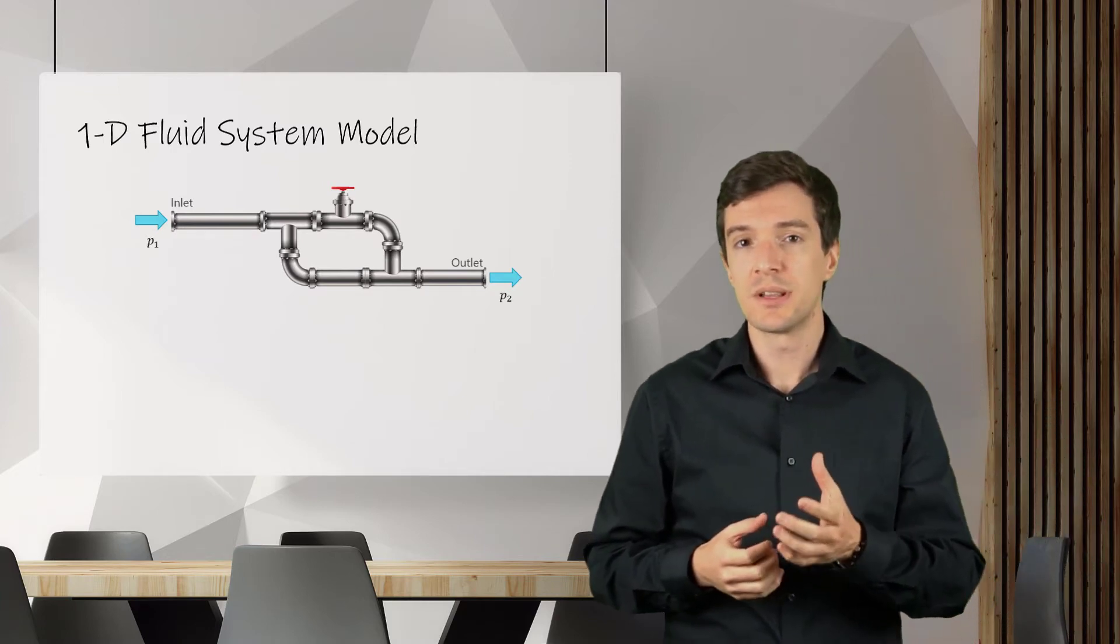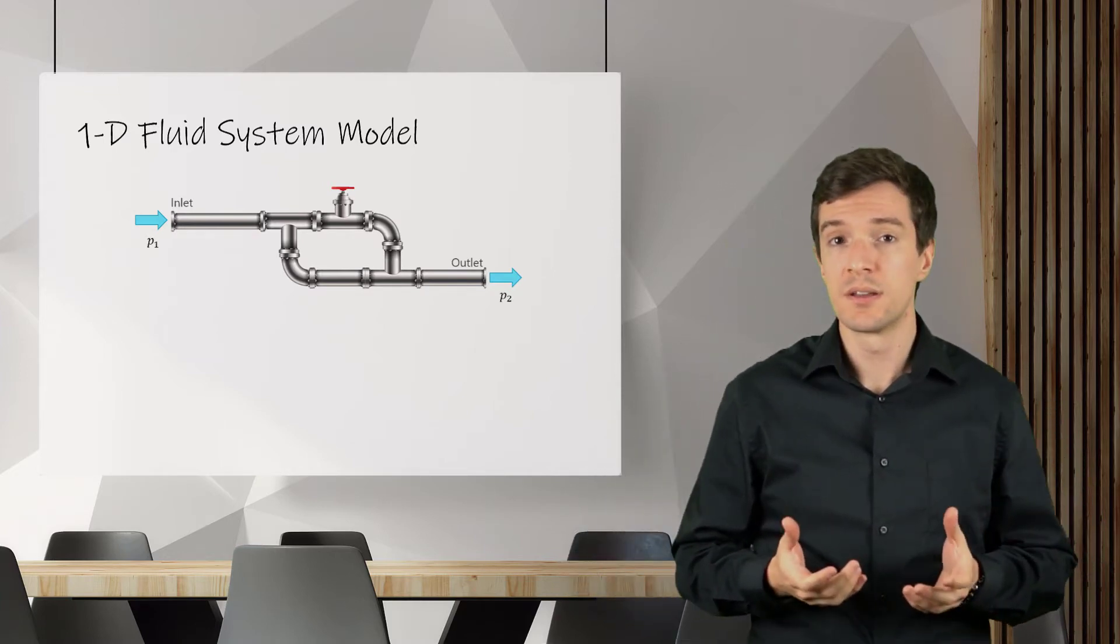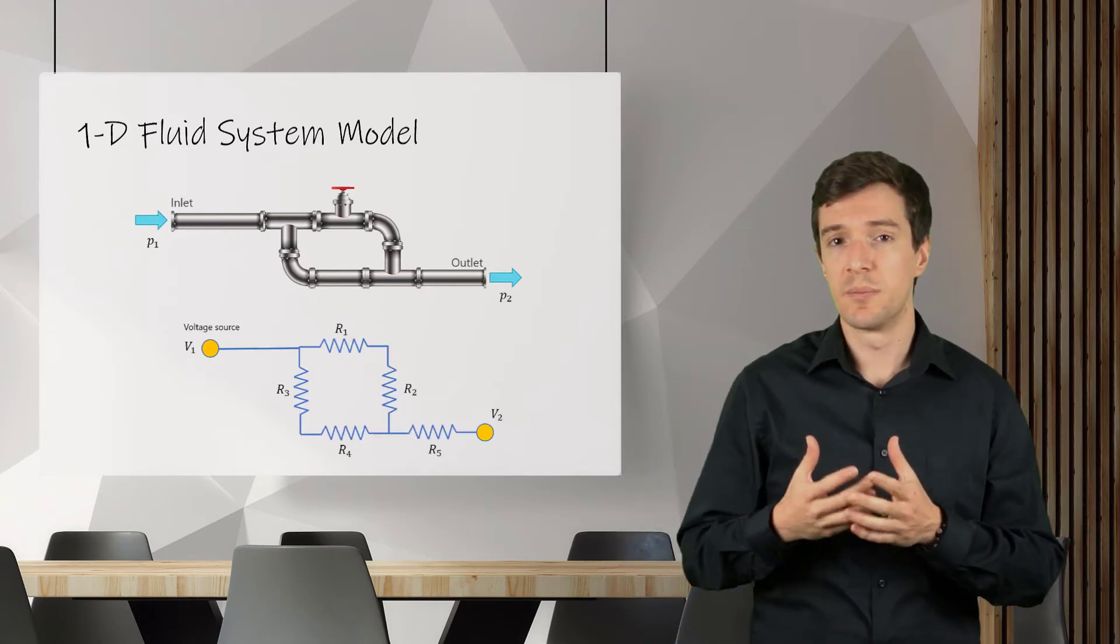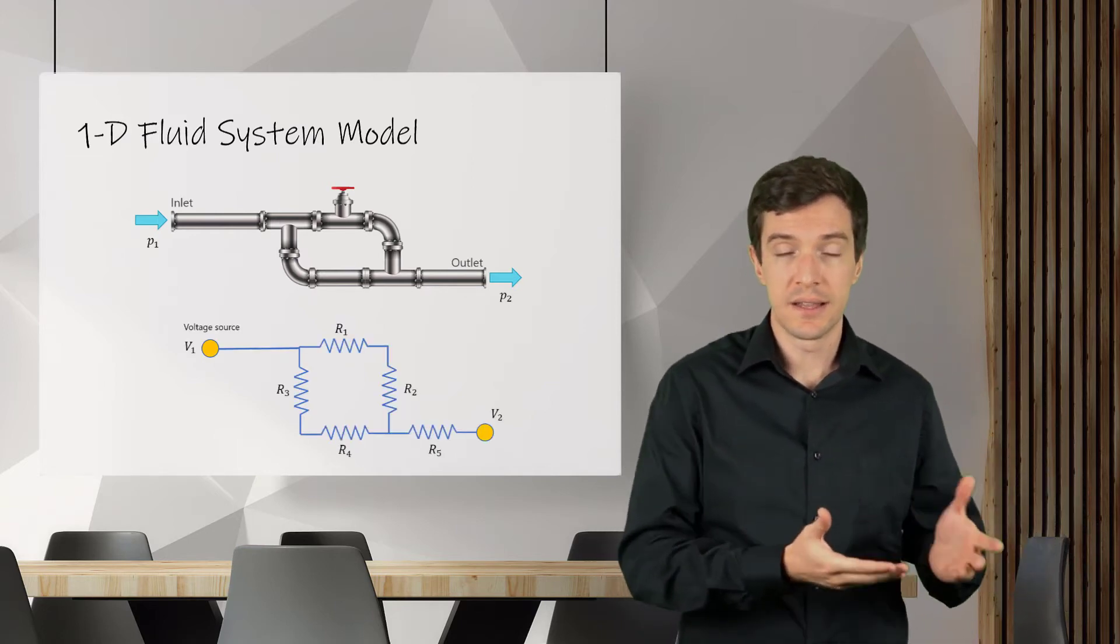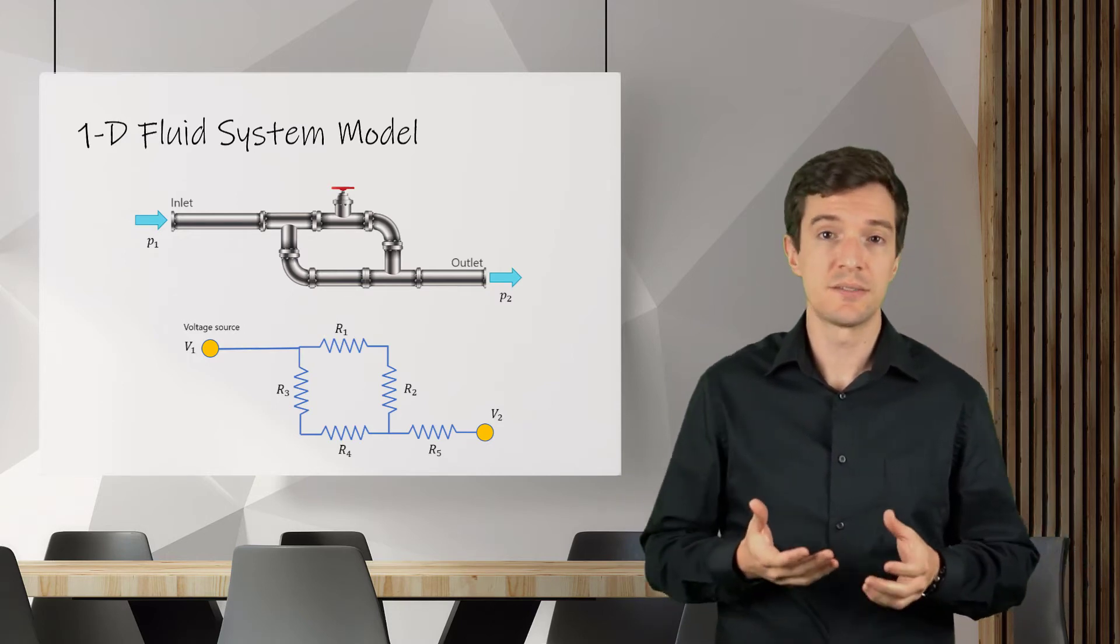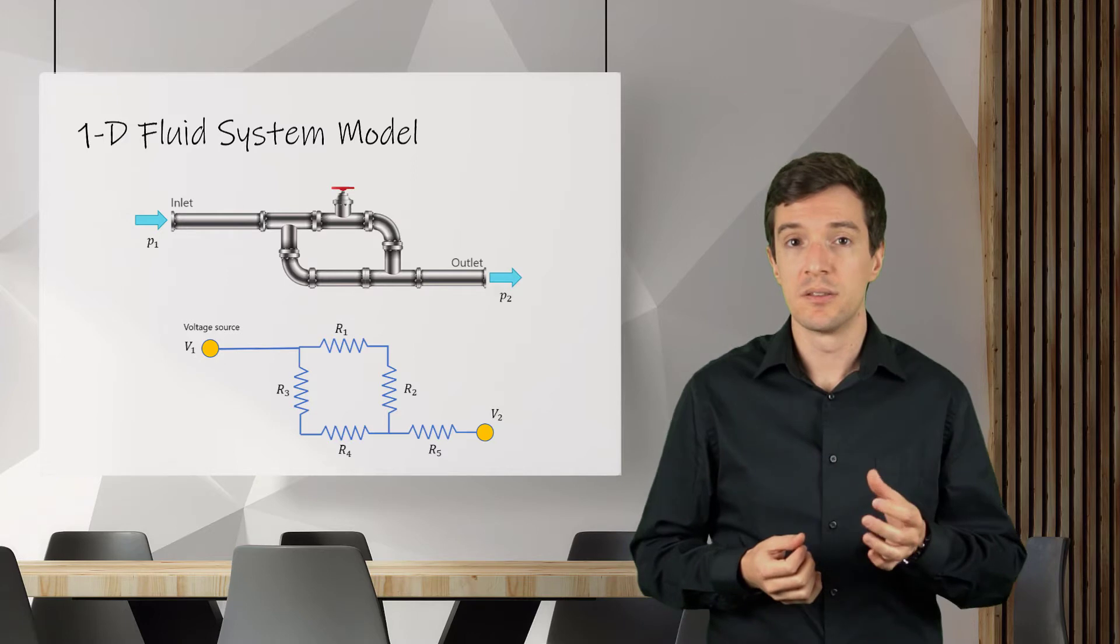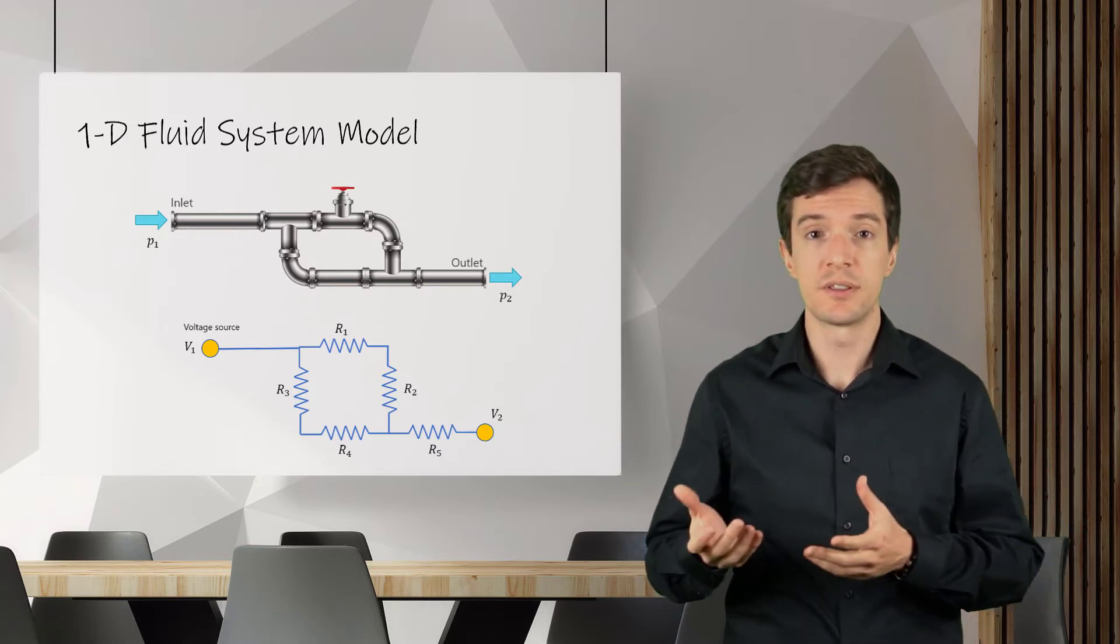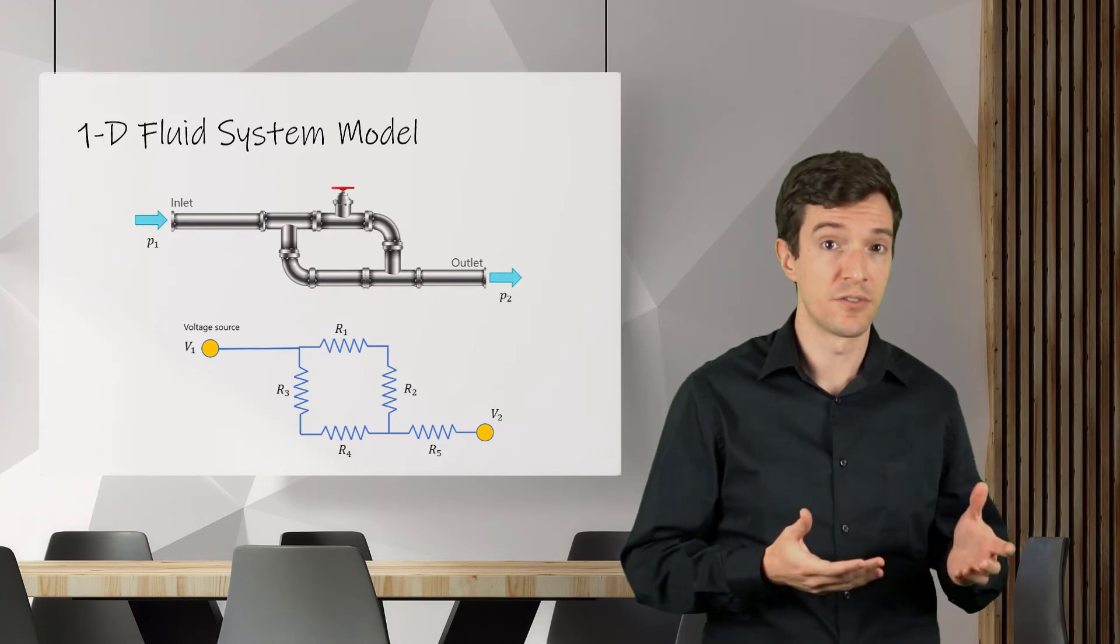This model is really similar to the one used to analyze an electrical network where the pipes are the electrical wires and the losses can be represented as resistors, and the pressure and fluid flow rate are the equivalent of voltage and electrical current flow.